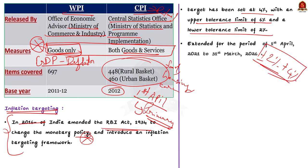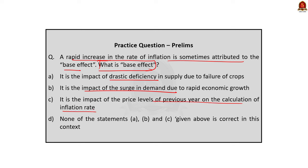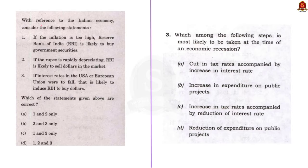Practice question: A rapid increase in the rate of inflation is sometimes attributed to the base effect. What is base effect? Statement A: impact of drastic deficiency in supply chain due to crop failure. Statement B: impact of surge in demand due to rapid economic growth. Statement C: impact of the price level of the previous year on the calculation of the inflation rate. Statement D: none of the above. The correct answer is option C — it is the impact of the price level of the previous year on the calculation of the inflation rate.